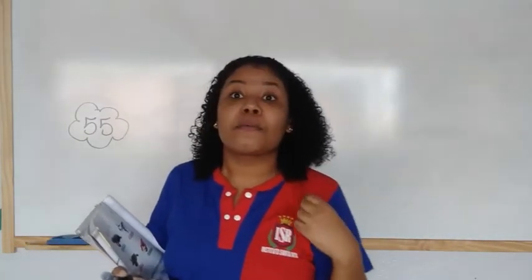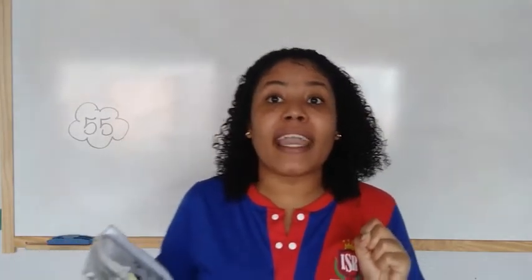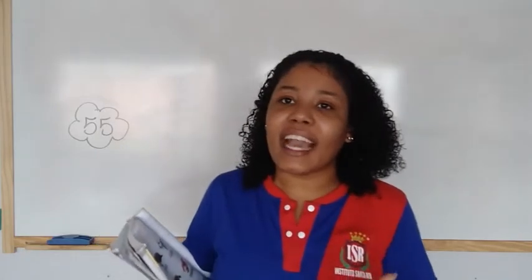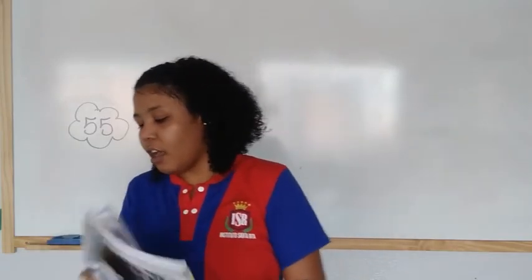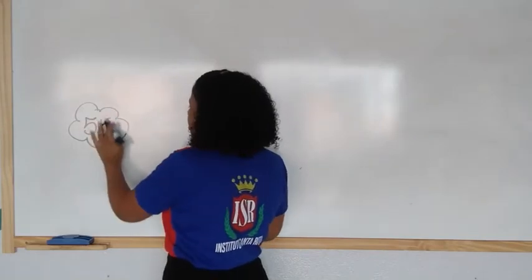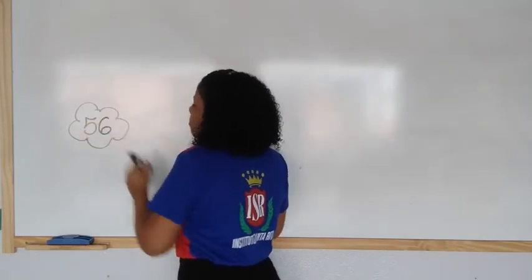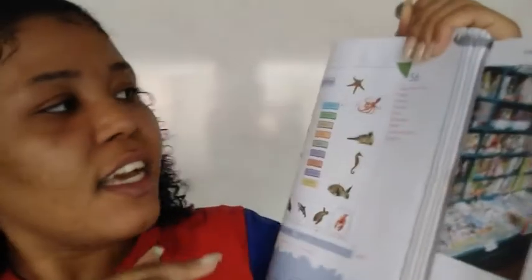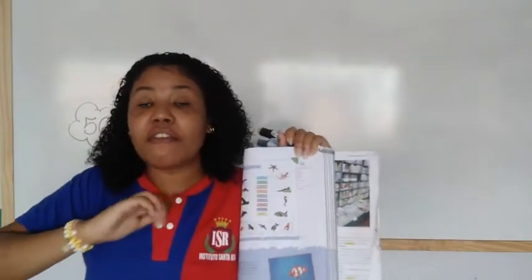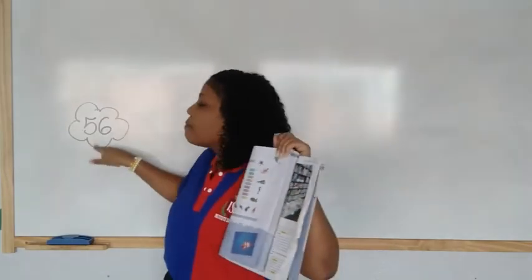We also have cavalo marinho — which we can call Seahorse. That's right — seahorse, que é cavalo marinho. So, we have many marine animals. Take a look at page 56. We have Starfish — que é estrela do mar. Octopus — que é polvo. And Fish — que é peixe. Take a look at page 56.